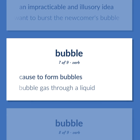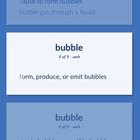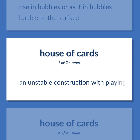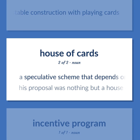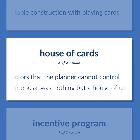Bubble: Cause to form bubbles — bubble gas through a liquid. Form, produce, or emit bubbles. Rise in bubbles, or as if in bubbles — bubble to the surface. An unstable construction with playing cards. A speculative scheme that depends on unstable factors that the planner cannot control — his proposal was nothing but a house of cards.